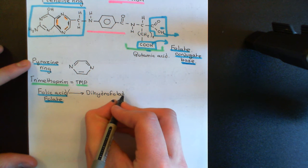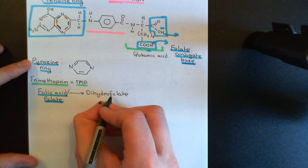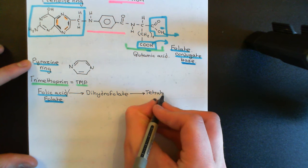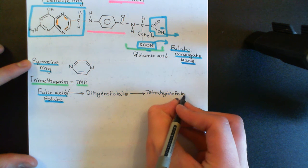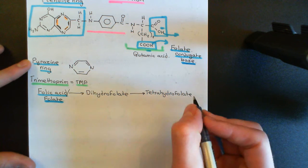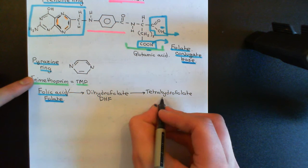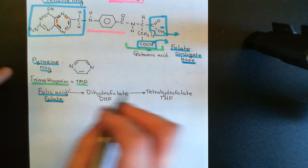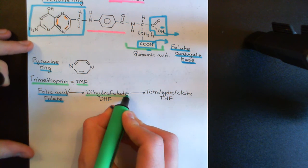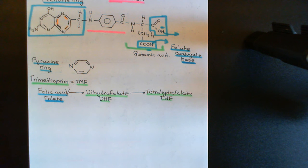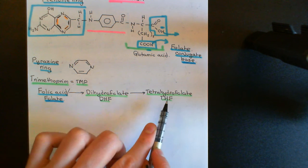Folic acid or folate is going to be converted into dihydrofolate — which you could call dihydrofolic acid — which will then be converted into tetrahydrofolate. DHF stands for dihydrofolate, and tetrahydrofolate is shortened to THF. It is THF that is really important for the function of those enzymes which are going to synthesize nucleotides. In order to use folate to help these enzymes produce the nucleotides of DNA and RNA, you have to first convert it into dihydrofolate and then into tetrahydrofolate.